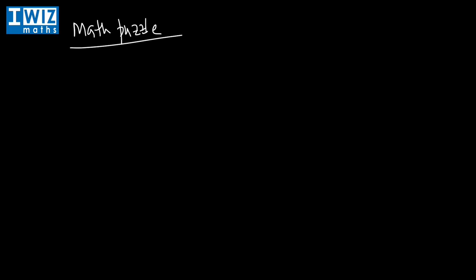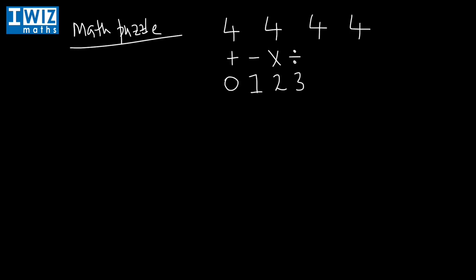I'm going to give you four fours — four, four, four, and four — and I'm going to give you a few math operators: plus, minus, multiplication, and division. Using all four fours and some or all of these math operators, you are going to arrive at the number zero, arrive at one, two, three, and all the way up to nine.